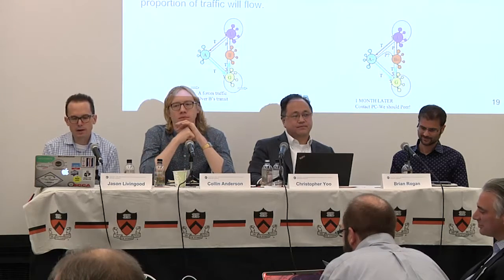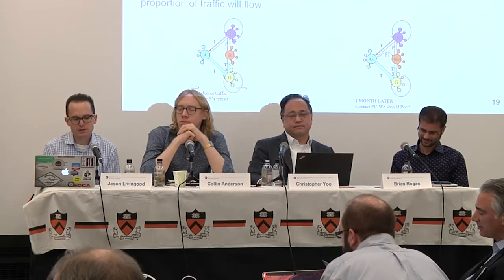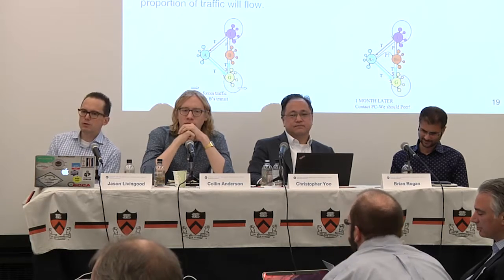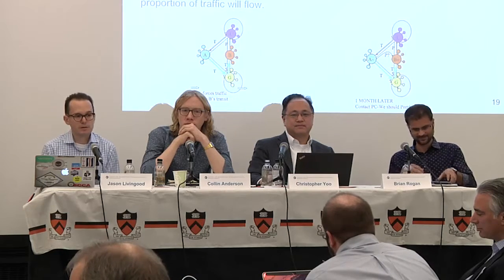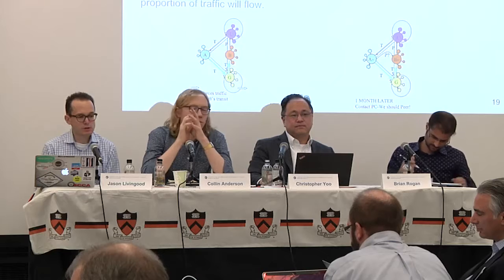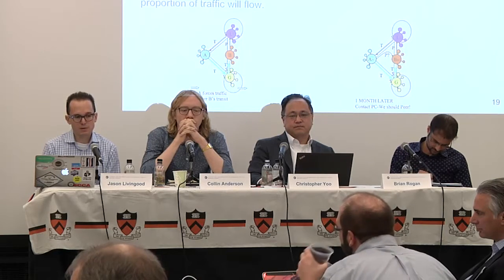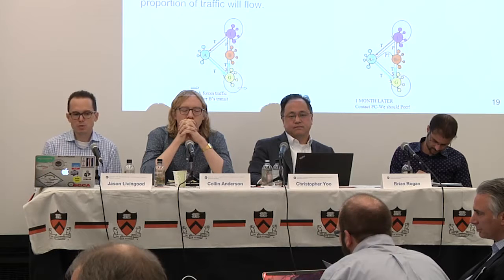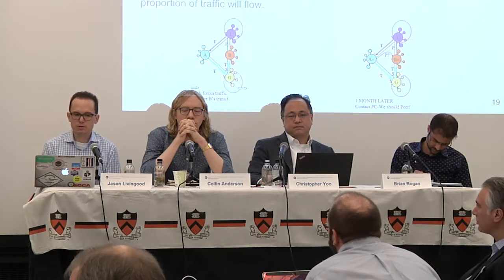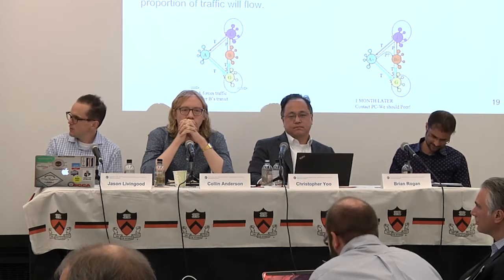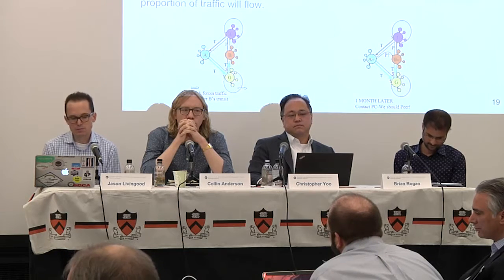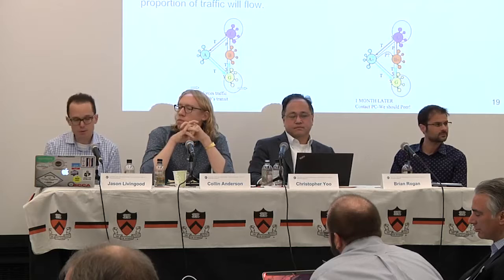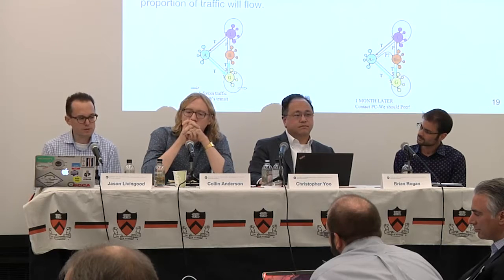Jason added that when you get to a certain level of scale, that brings a certain level of responsibility to the Internet to be a good actor. If you can shift 20 or 50 percent of traffic around — while that might suit your own individual business needs — you're having all of these secondary effects on other networks and other applications, which can be really problematic. Those are just sort of collateral damage of that kind of rapid shift. ISPs' views of those shifts are starting to change — he mentioned starting to look at those things more as a DDoS-like event because of their impact.